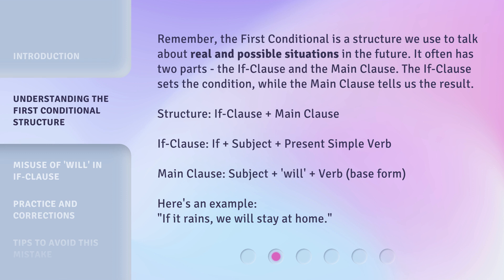The if-clause sets the condition, while the main clause tells us the result. Structure: if-clause plus main clause. If-clause: 'if' plus subject plus present simple verb. Main clause: subject plus 'will' plus verb base form. Here's an example: If it rains, we will stay at home.